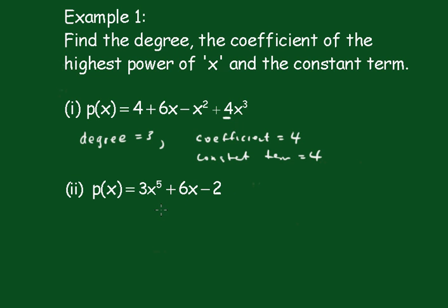And this one here, the degree is 5. The coefficient of the highest power of x is this one, which is 3. The constant term in this case is negative 2.